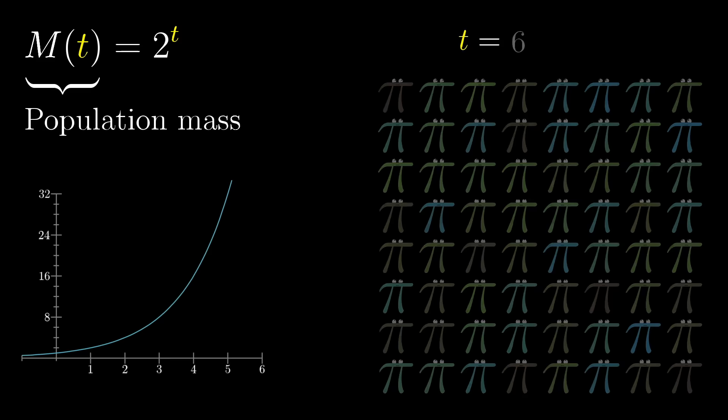So for example, at time t equals 0, the total mass is 2 to the 0 equals 1, for the mass of one creature. At t equals 1 day, the population has grown to 2 to the 1 equals 2 creature masses. At day t equals 2, it's t squared, or 4, and in general, it just keeps doubling every day.